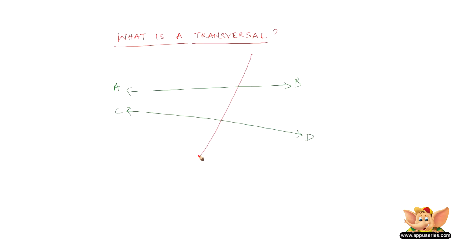Now if another line intersects these lines like this, say let's name these EF. Now if these two lines are intersected by EF, the line that intersects AB and CD is called as a transversal.